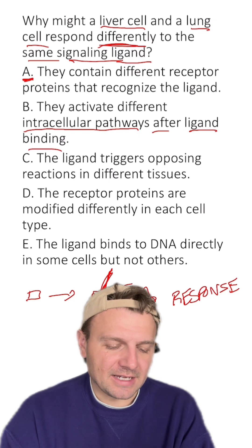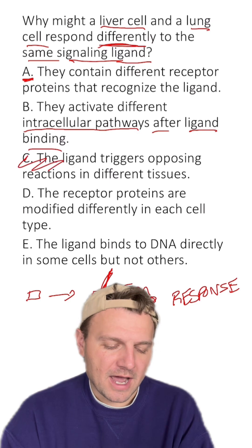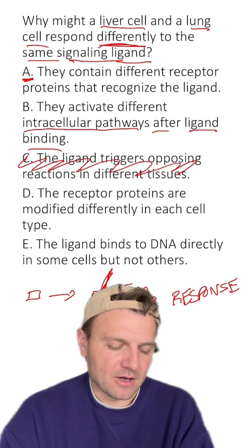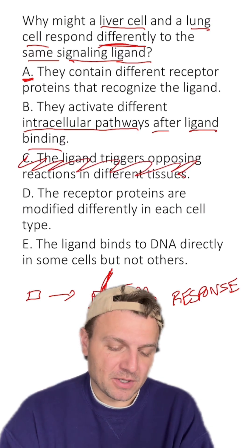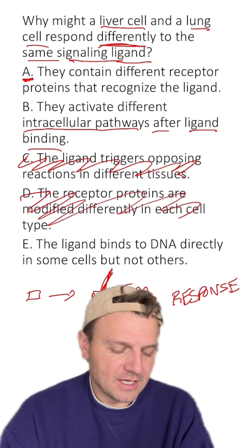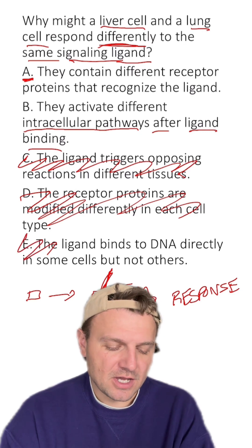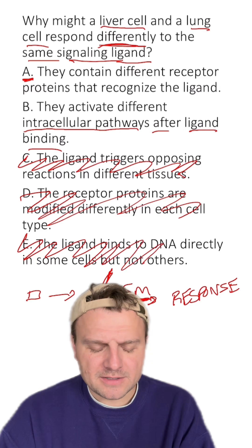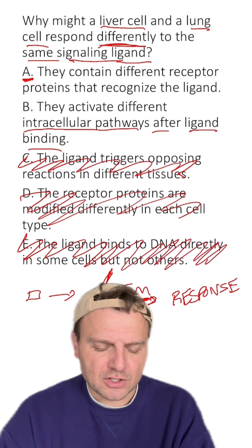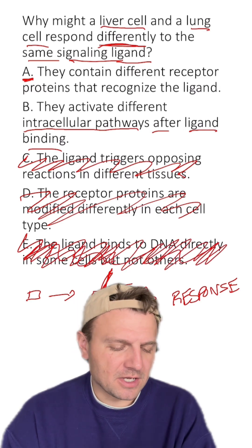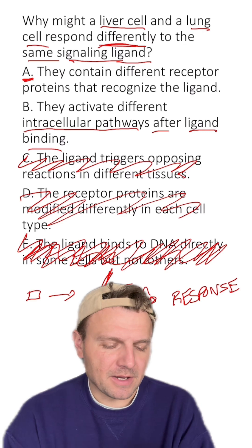C: the ligand triggers opposing reactions in different tissues. No, I didn't talk about that at all. D: the receptor proteins are modified differently in each cell. No, didn't talk about that at all. E: the ligand binds to DNA directly in some cells but not others. No — I mean, some ligands will create a DNA response, but that's not what we're talking about here.